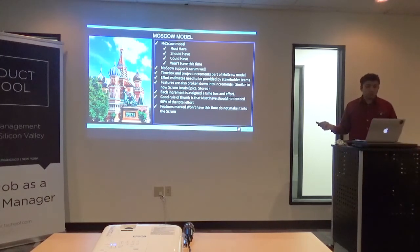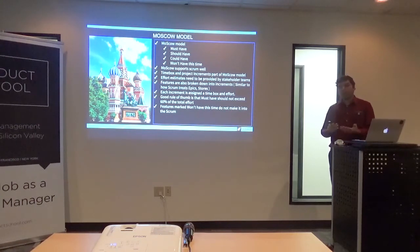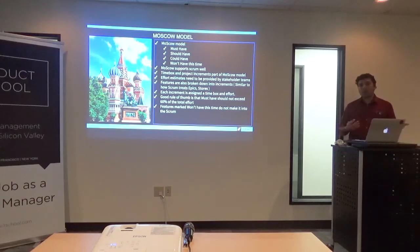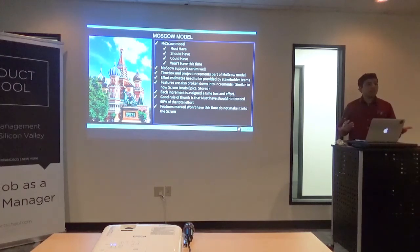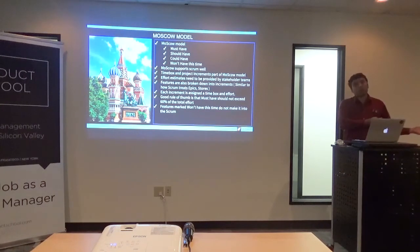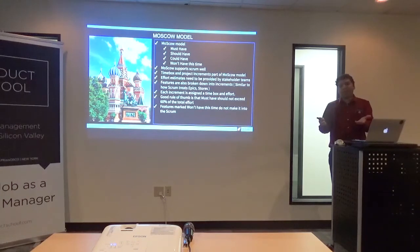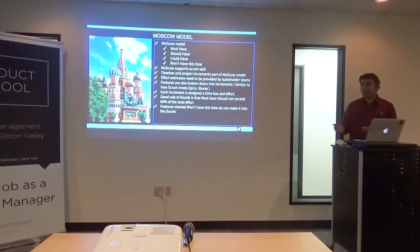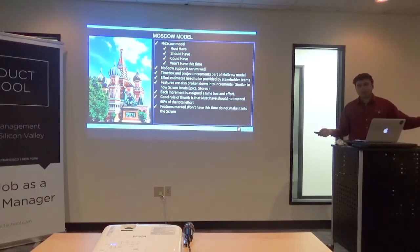One other common challenge for product managers is how do you earn trust with your engineering teams? You earn trust over time by writing crisp, precise product requirements and prioritizing properly. Nobody loves churn — if you came up with a set of features on Monday and a completely different set on Friday, you certainly won't earn trust with the engineering team. But if you do this right, you make their life easier by removing features where customers are indifferent or that fall into the won't-have category. It makes it easier for everybody.